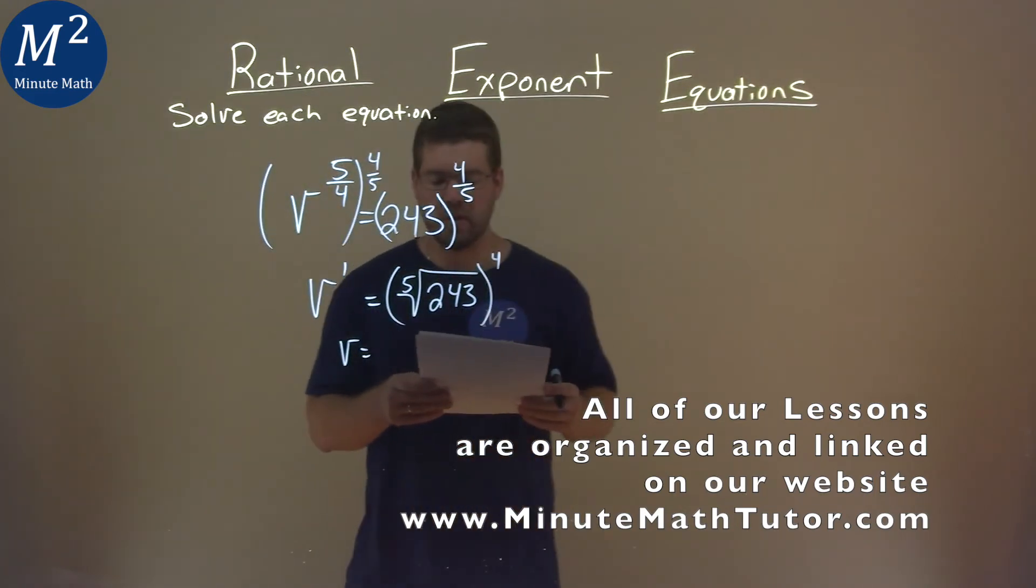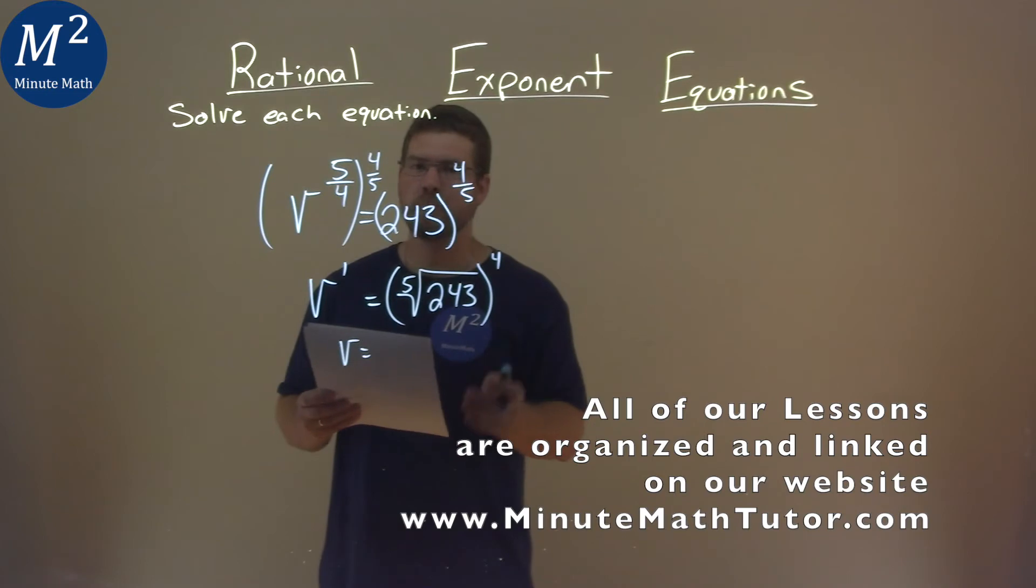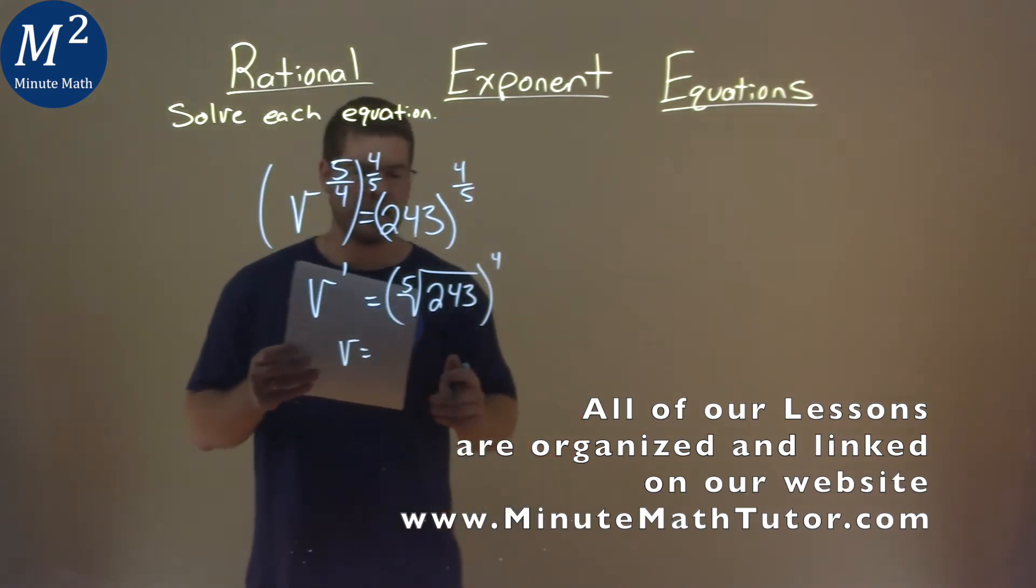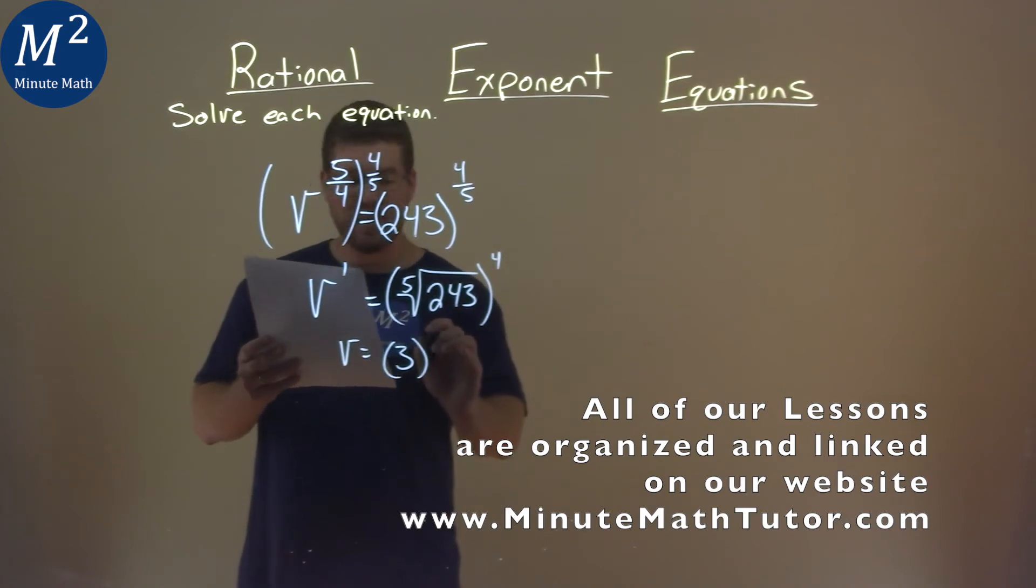What's the fifth root of 243? If you know it off the top of your head, let me know down below, but I don't. That answer is actually just 3.